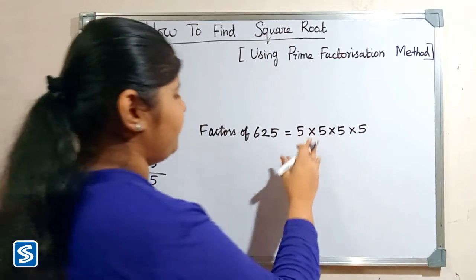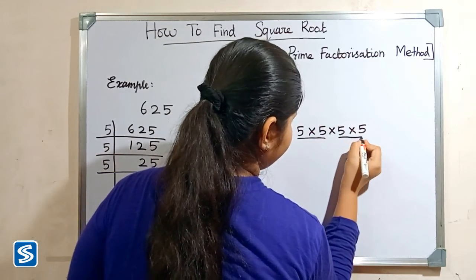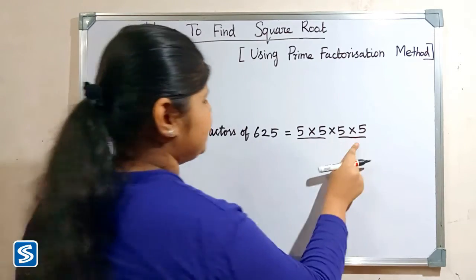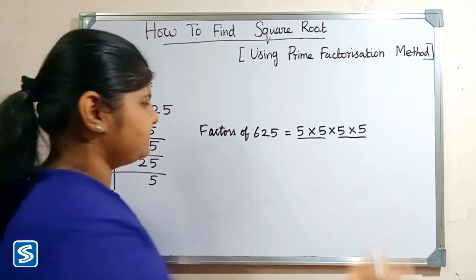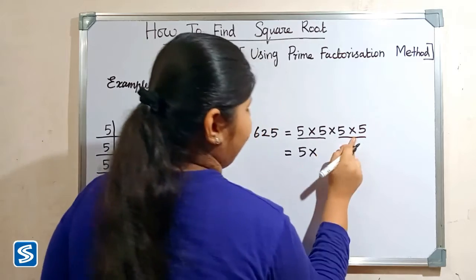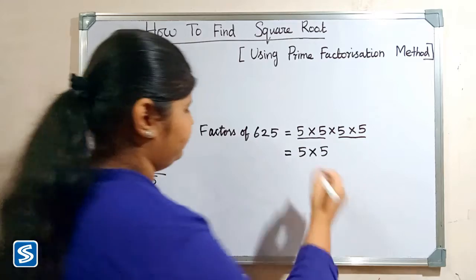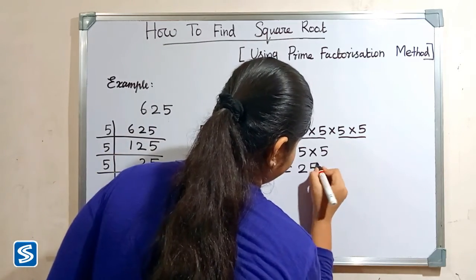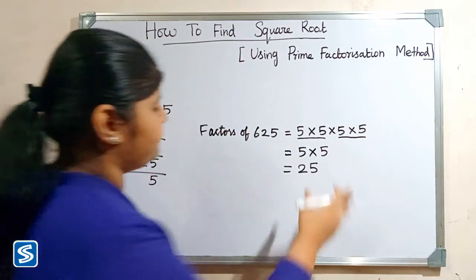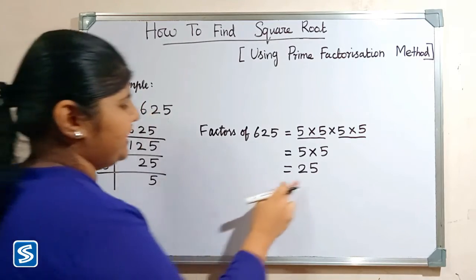Next we have to make pairs of similar factors. We take one factor from each pair and find the product: 5 × 5 = 25. The product is the square root of the given number, so the square root of 625 is 25.